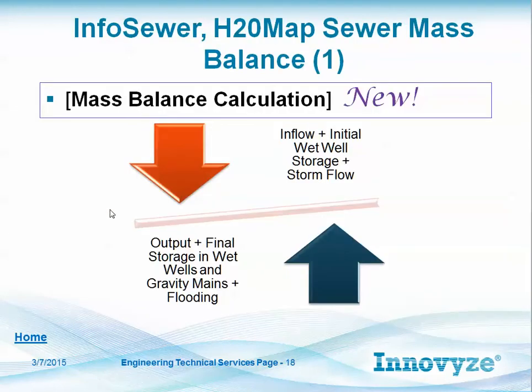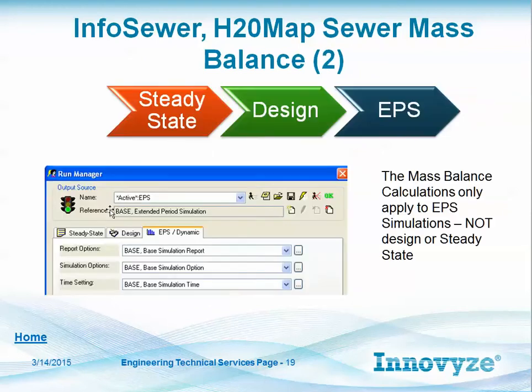Mass balance is newer to InfoSewer, post-2011. It tells you what the initial wet well volume was in flow, plus storage, plus storm flow, and gives you a balance compared to the output, final storage, and whether there's any gravity main flooding or overflow in your system. The mass balance applies only to EPS, not to steady state.